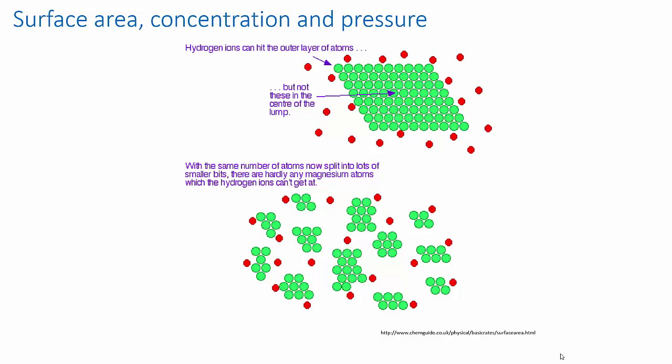Car engines use surface area effects to increase reaction rates. By spraying the fuel into the engine cylinder in microscopic droplets, rather than in a single liquid stream, the fuel burns more rapidly.